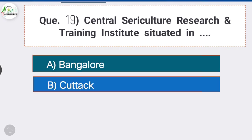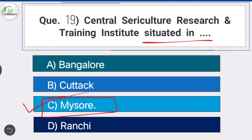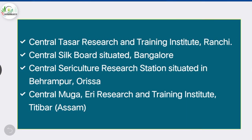Question 19: The Central Sericulture Research and Training Institute is situated in Option C, the correct answer: Mysore. Other institutes include: Central Tasar Research and Training Institute in Ranchi; Central Silk Board in Bangalore; Central Sericulture Research Station in Berhampore, Odisha; and Central Muga Eri Research and Training Institute in Titabar, Assam.